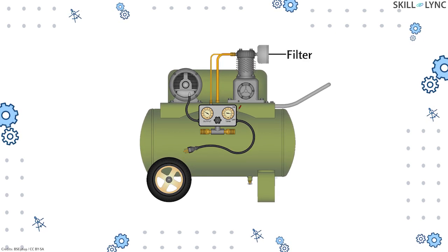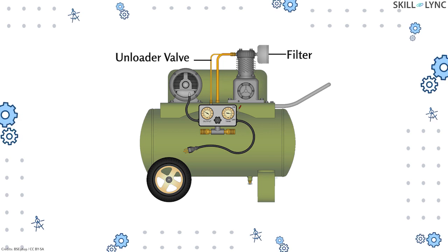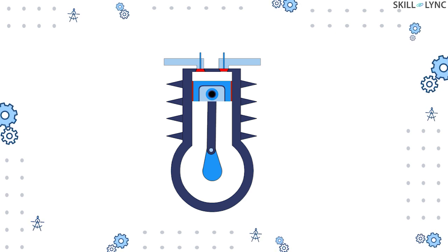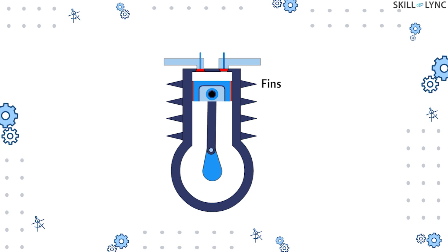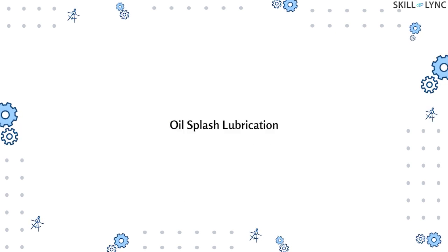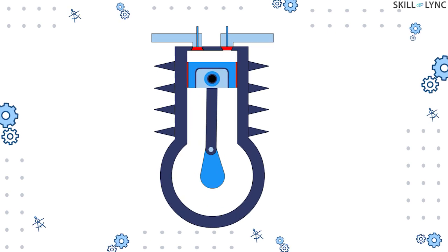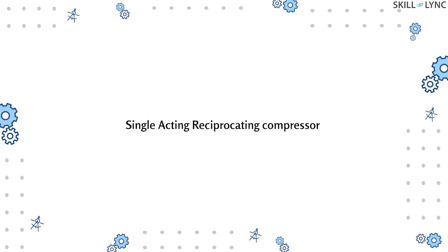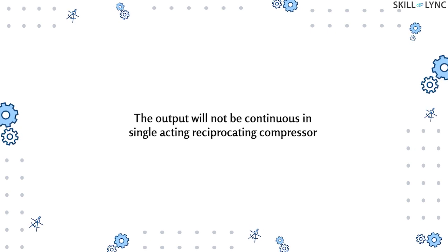Here the air enters the compressor through a filter, and the storage tank is provided with an unloader valve which releases the excess pressure. The compression of air results in high temperature, so to cool down the system, water jackets or fins are provided to the compressor. The lubrication of the piston is done by the oil splash method, and the piston is provided with a seal to avoid oil entry into the chamber.